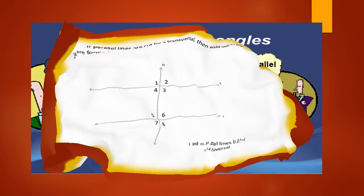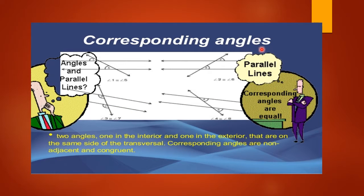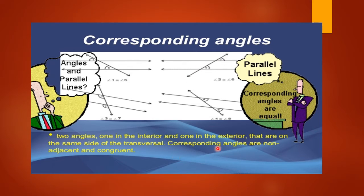What are those corresponding angles? Two angles — one in the interior and one in the exterior — that are on the same side of the transversal. This is interior, meaning inside, and one is at exterior, meaning outside of the transversal. Corresponding angles are non-adjacent and they are congruent — corresponding angles are equal. So angle two will be equal to angle six in measurement.